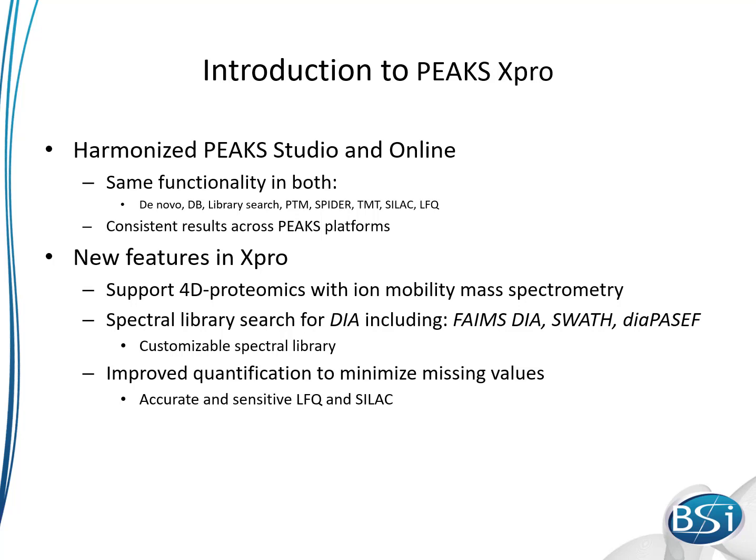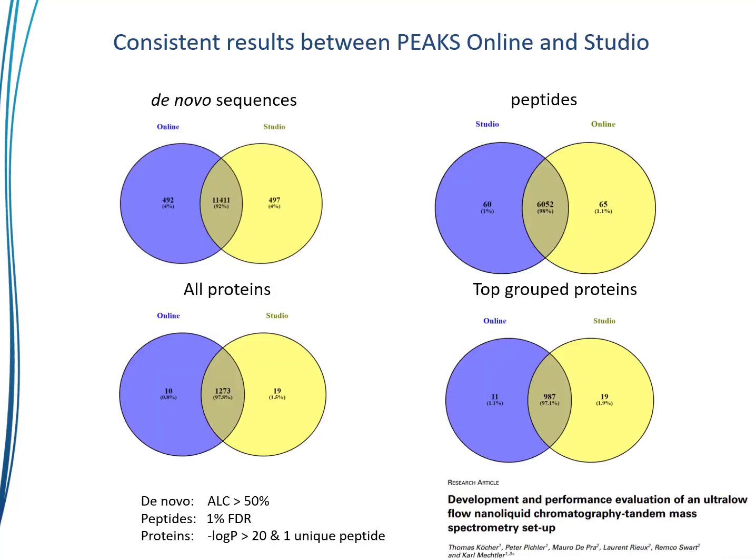Even though Peaks Online and Peaks Studio are different platforms, they operate from the same trusted Peaks algorithms. So we have put a tremendous amount of work into ensuring consistency between the two platforms. With several datasets, whether it's at the de novo sequencing, peptide, protein, or protein group level, you can be sure you're getting the same results with Peaks Studio that you get with Online, or vice versa.